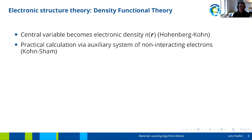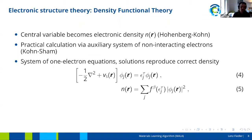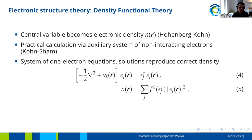Practically, DFT calculations are done using an auxiliary system of non-interacting electrons restricted to reproduce the density of the interacting system. This results in a system of one-electron equations — the Kohn-Sham equations — for one electron with a kinetic energy term and an effective potential, resulting in energy eigenvalues that are now temperature-dependent. Using these one-electron wave functions, also called Kohn-Sham orbitals, we can calculate the electronic density via an equation that includes the Fermi-Dirac distribution, which we need because of the temperature we're considering.